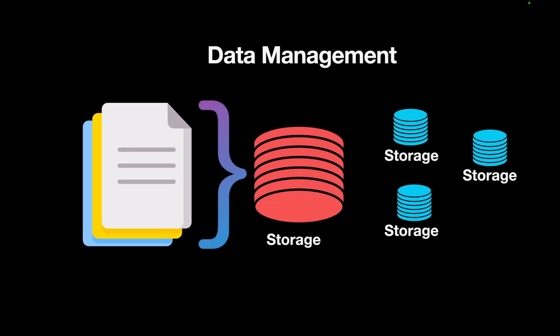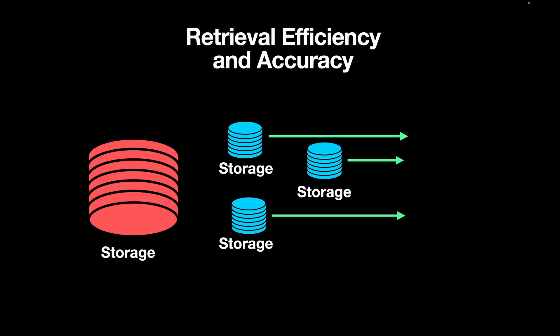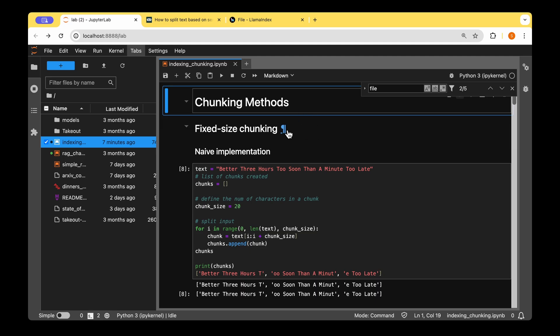The next problem is data management itself. Chunking enables easier management — instead of a huge 30 GB file stored in single storage, it's much easier to divide it into, say, 100 files of 300 MB and keep them distributed. The next problem is retrieval efficiency and accuracy. When data is broken down into smaller chunks, it's much easier to handle retrieval and also to improve the accuracy of the language model.